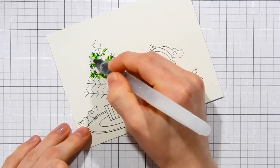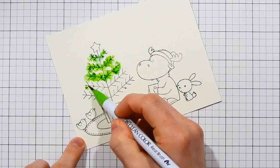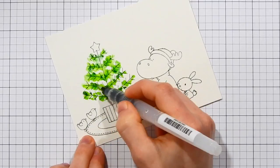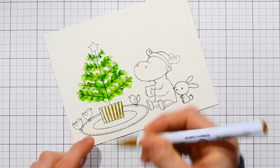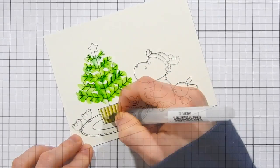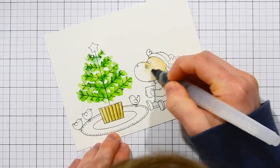So I'm going to go ahead and color in these images with my Zig Clean Color markers. I did some very simple shading here. I'm just using a variety of markers and some colors to just add some really simple shading to these images.